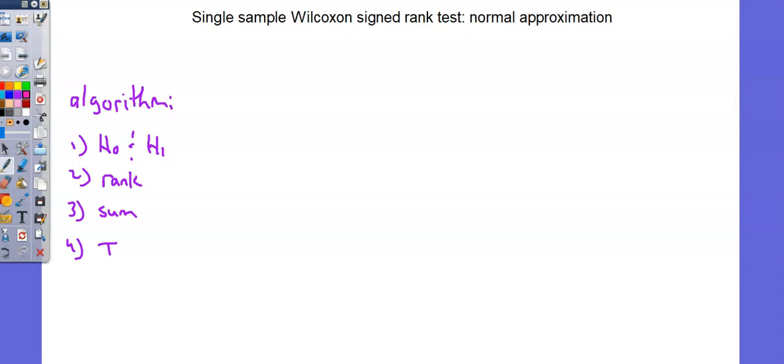Hi, I'm Teacher Thomas. Welcome to A-Level Maths. This is 9231, Further Probability and Statistics. Topic 4, Nonparametric Tests. Our topic is Single Sample Wilcoxon Signed Rank Test Normal Approximation.